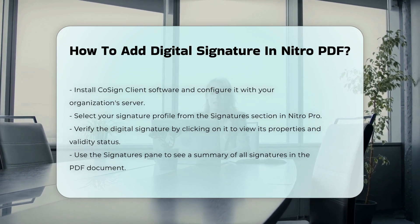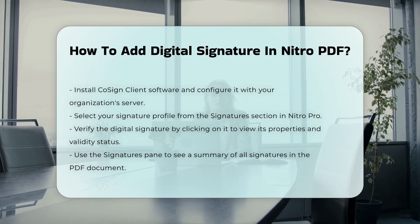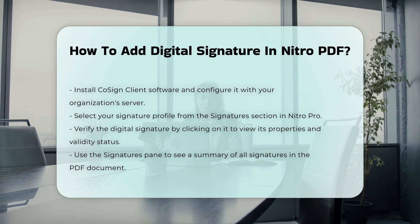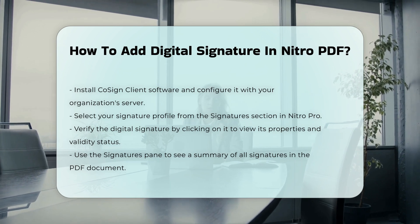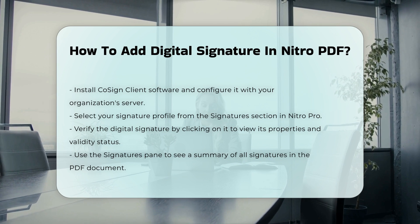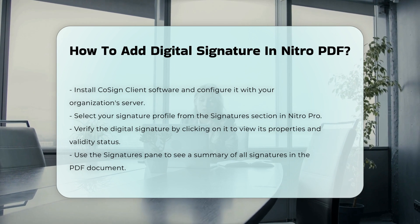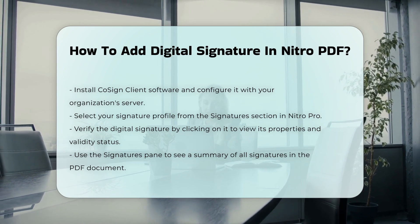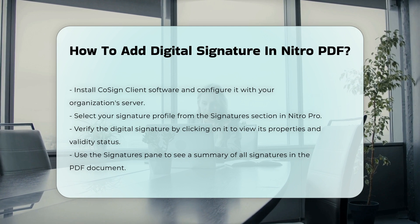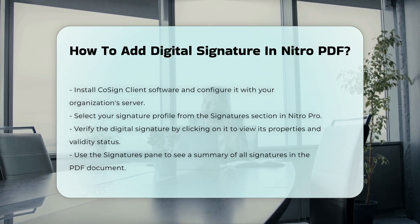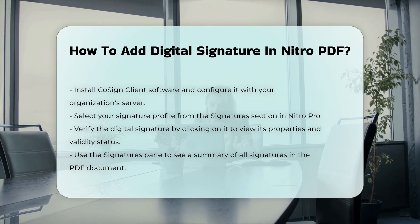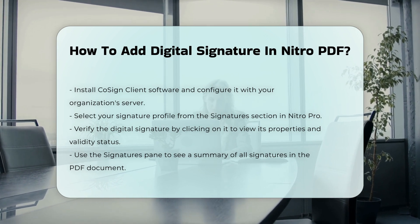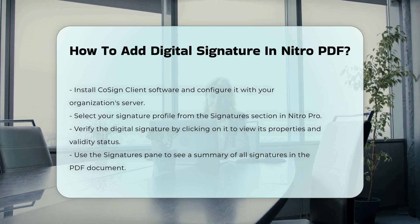Verifying Signatures. After signing the document, you can verify the digital signature by clicking on it within the document. This will display the properties of the signature, including its validity status. The Signatures pane in Nitro Pro lists all signatures in the PDF document and provides a summary of each signature.